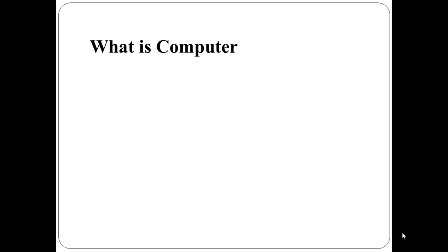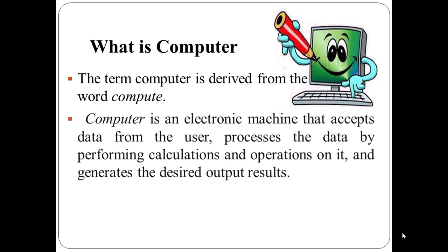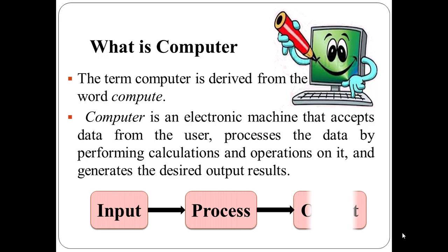What is computer? The term computer is derived from the word compute. The word compute means to calculate. A computer is an electronic machine that accepts data from the user, processes the data by performing calculations and operations on it, and generates the desired output result. Computer performs both simple and complex operations with speed and accuracy.